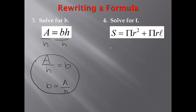For number 4, we're going to solve for l. We have s equals pi r squared plus pi r l. If we want to solve for l, we first need to move pi r squared. In order to move it, we subtract it from both sides. So we subtract pi r squared from both the left and right-hand sides. Now we have s minus pi r squared, and pi r squared minus pi r squared is 0, so it's equal to pi r times l.